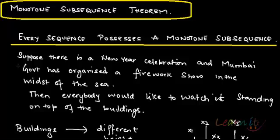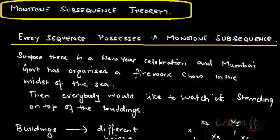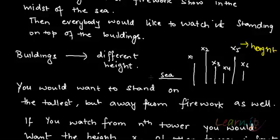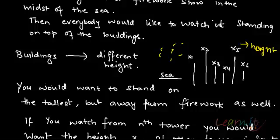Let me give you an example. Suppose there is a New Year celebration in Mumbai and the Mumbai government has organized a firework show in the middle of the sea. Everybody would like to watch it standing on top of the buildings so that they can view it clearly. Buildings will have different heights — X1, X2, X3 — these denote the heights of the buildings. You would want to stay away from the firework and also stand on top of the tallest building.